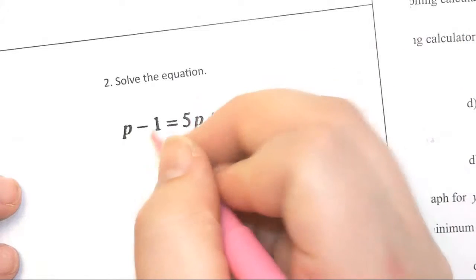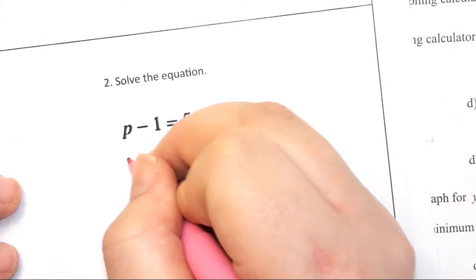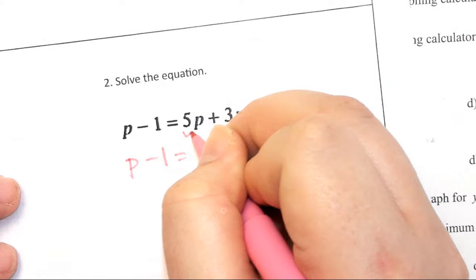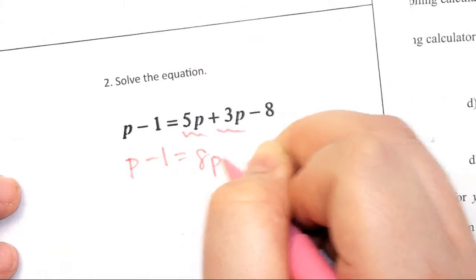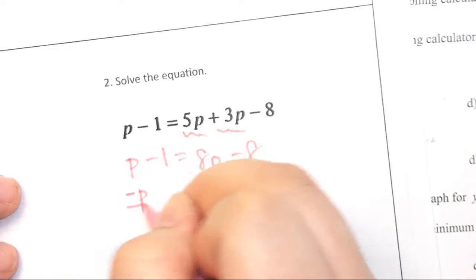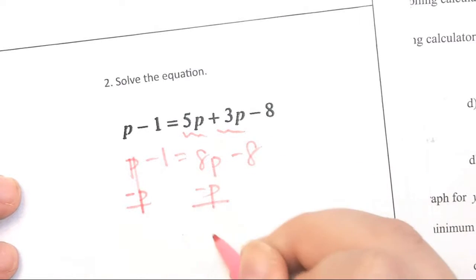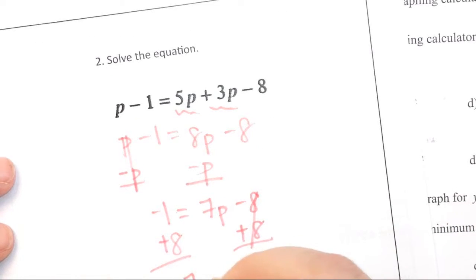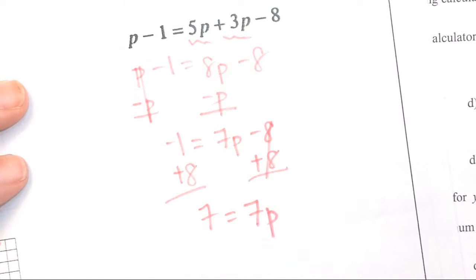Solve the equation. Doesn't seem that bad either. If I combine the like terms on the right, I will have 8p minus 8. If I subtract p from each side, I have 7p and negative 1 and minus 8. I add 8 to both sides. 8 minus 1 is 7, so I end up having 7p equals 7. Could you have done this a lot faster to get to p equals 1?